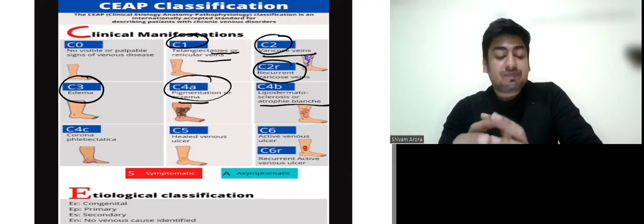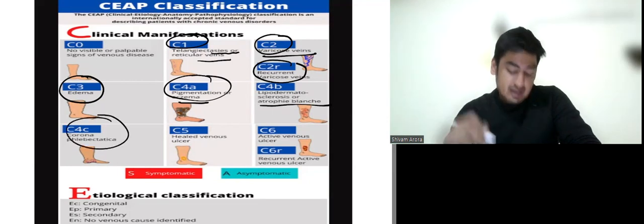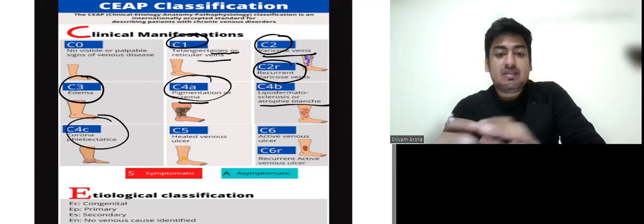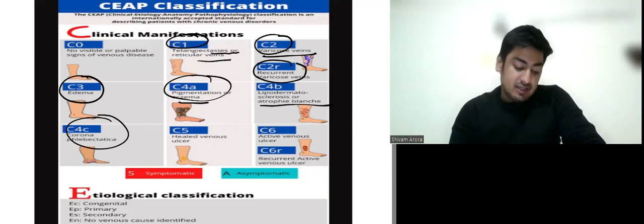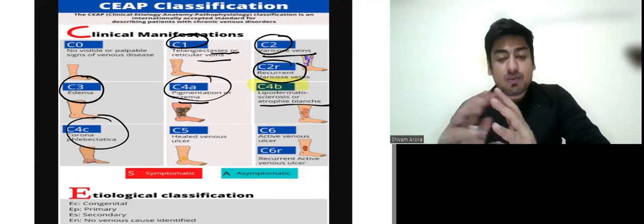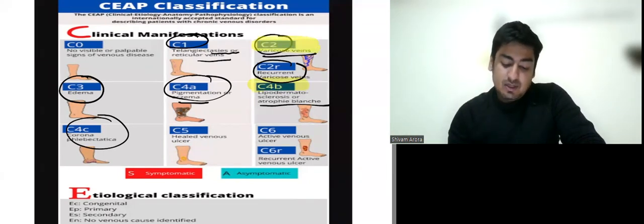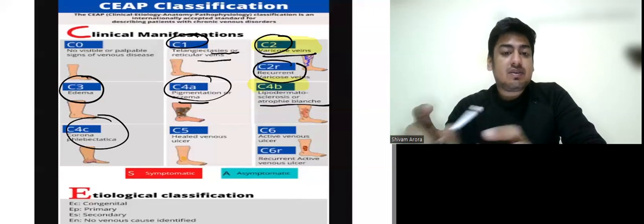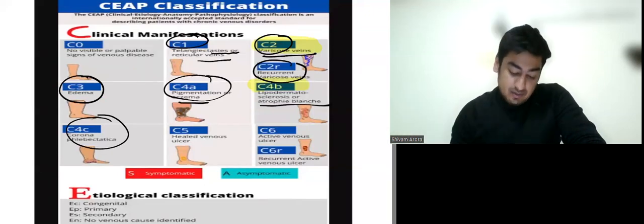If there is long-standing, there will be more significant changes which is known as corona phlebectasia. It is C4C. Now, the most important is this C4B stage because this has been asked. Other important is this C2 because they can directly ask you that varicose veins are constantly visible at what stage.